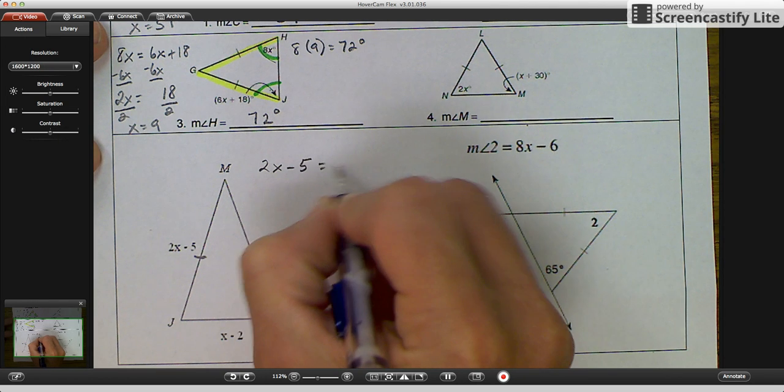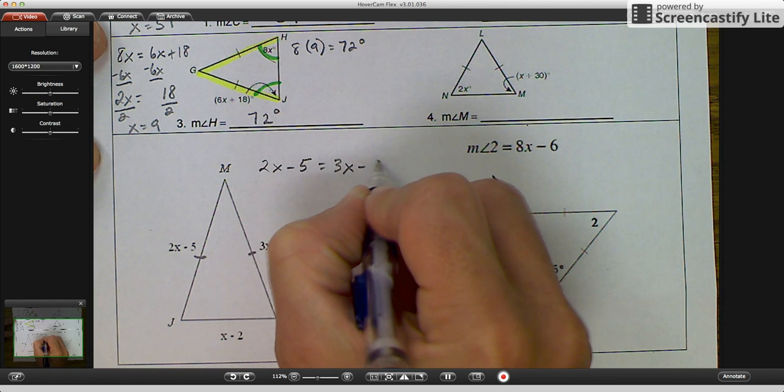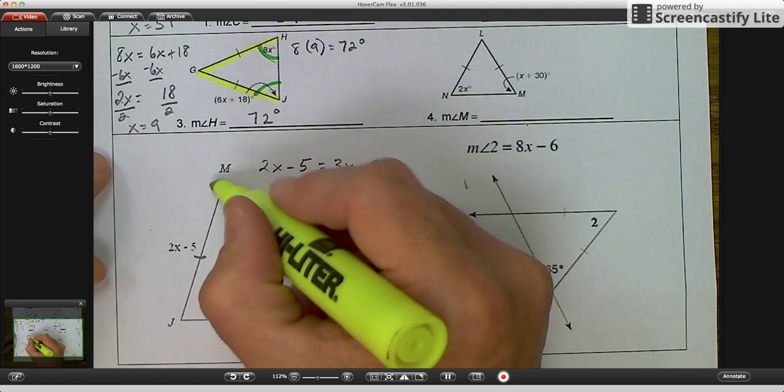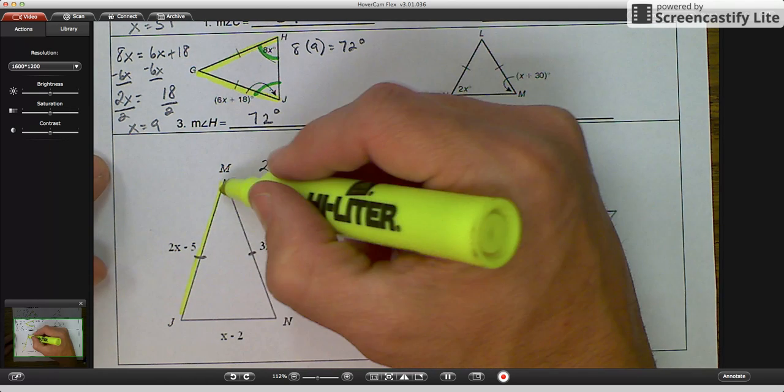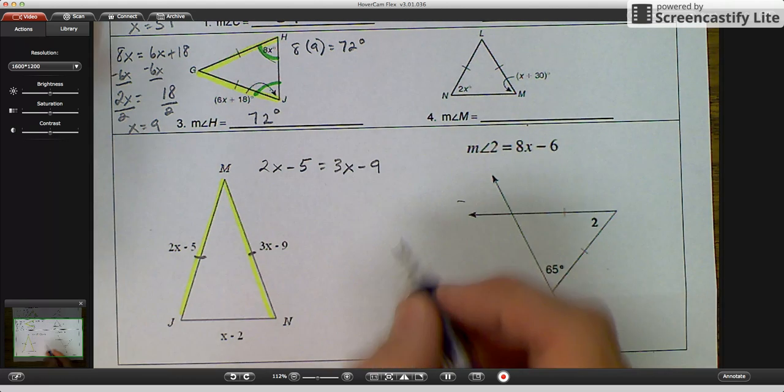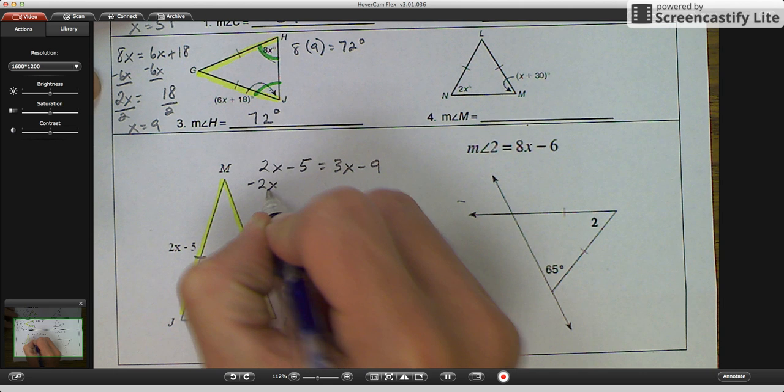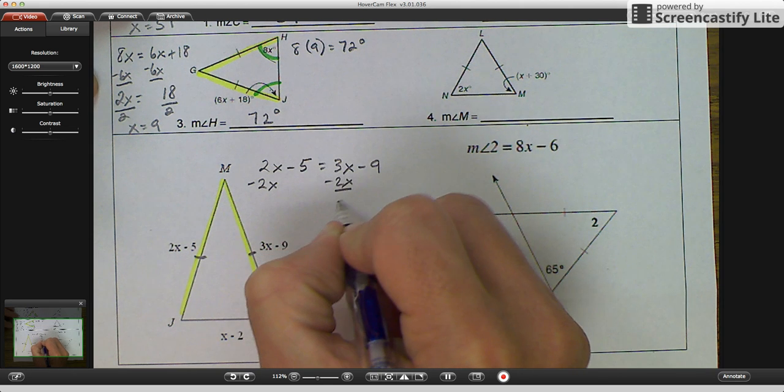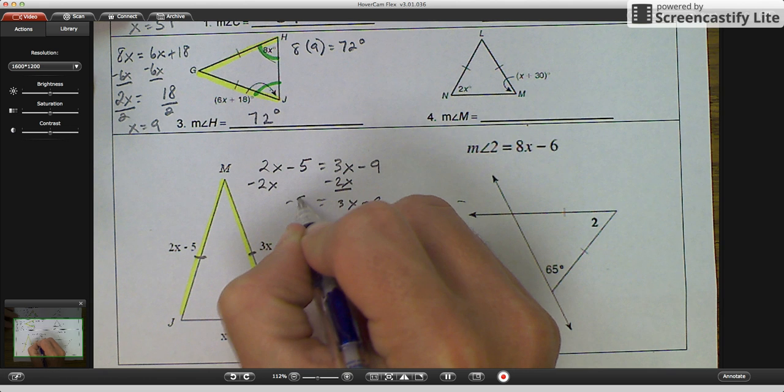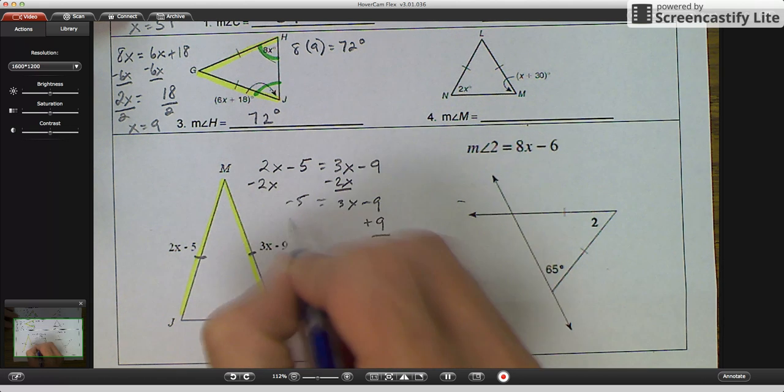2X minus 5 is equal to 3X minus 9. And the way we got that is this is congruent to that side. So they're congruent. Subtract 2X from here and from here, you get 3X minus 9 is equal to negative 5. Add 9 on both sides.